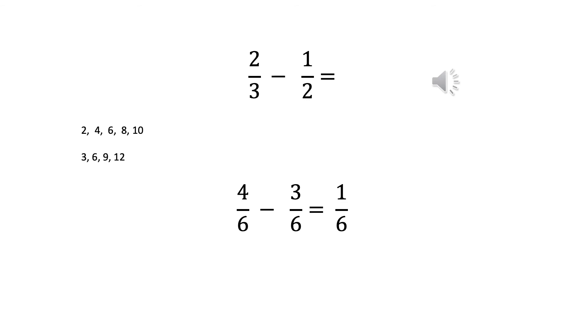So you would have listed two, four, six, eight, ten. And then the multiples of three: three, six, nine, twelve. And you can see that the lowest common multiple is six because that appears in the multiples of two and it also appears in the multiples of three. So you need to change your fractions, your denominators into six.